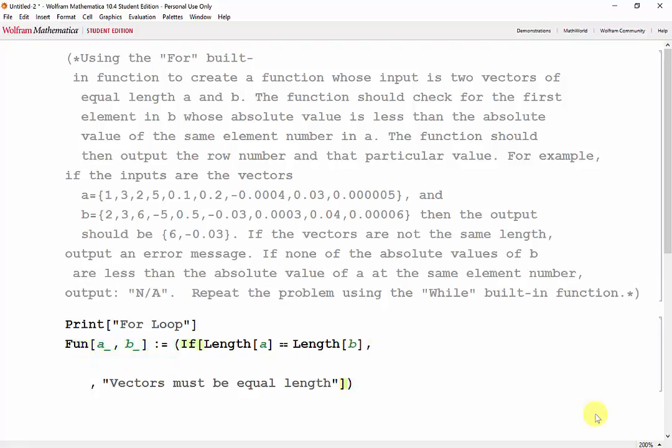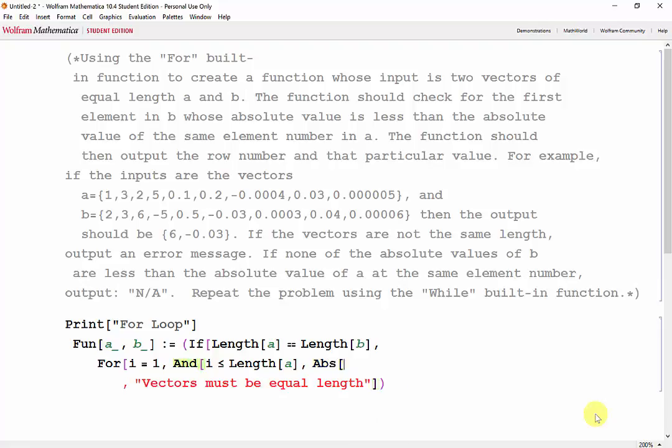Now for actually checking b, we'll use a for loop. We'll need an increment i to check the elements of the vector. And then we want to keep going, so long as i is less than or equal to the length of a, and also, so long as we haven't found a value of b of i that meets the criteria. So absolute value of b of i is greater than or equal to the absolute value of a of i. And then we want to increase i by each iteration.